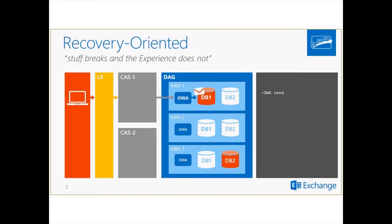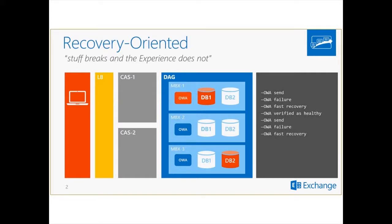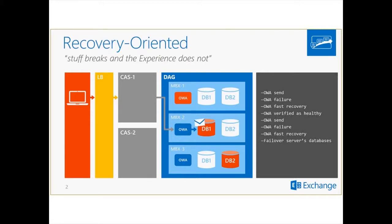In a common scenario, a user uses OWA to send mail. It goes through the OWA protocol on that mailbox server to that database on that server. Remember that in the Exchange 2013 architecture, all processing is handled by the mailbox server where the active database is. So if OWA fails, users can't access their mail through OWA. OWA recovers itself by restarting, or maybe resetting an IIS app pool. But if OWA fails again and it doesn't recover, it can fail over that server's database, so users are no longer connecting to that server — they connect to a server with a healthy OWA. When OWA is verified as healthy, the databases could fail back to that server.